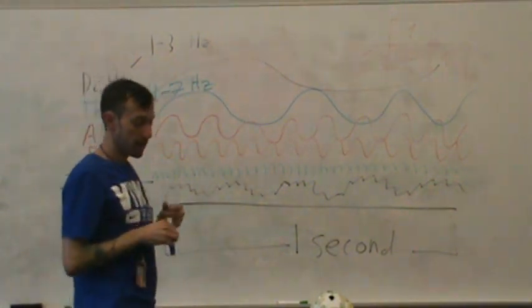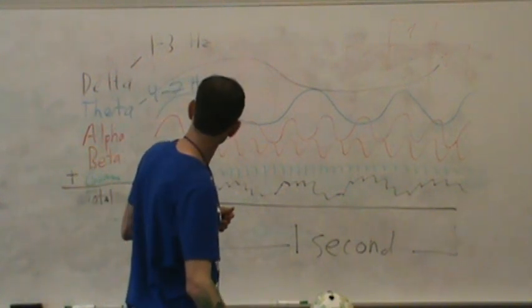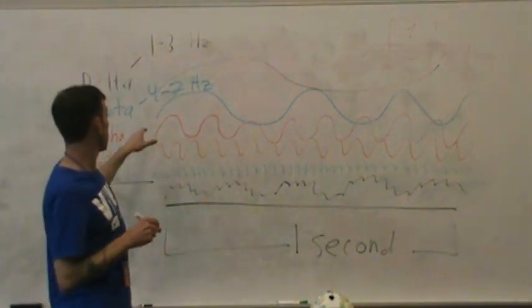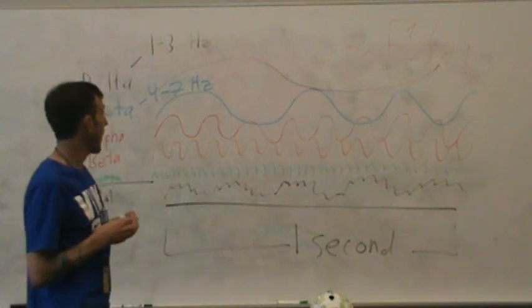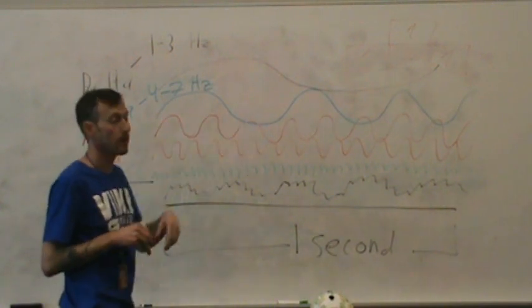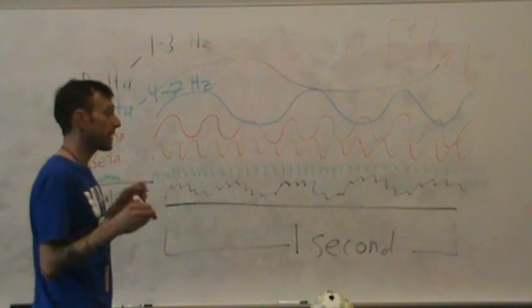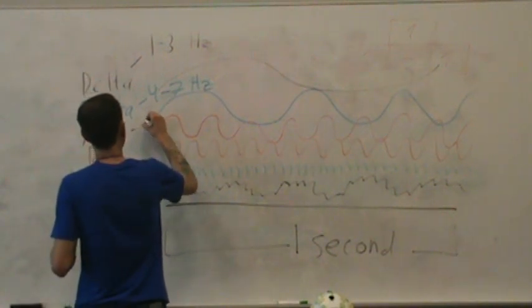Next, in red, we have alpha. And alpha is going to be a little bit faster than theta here. Alpha is going to cycle anywhere between about eight and twelve hertz per second.